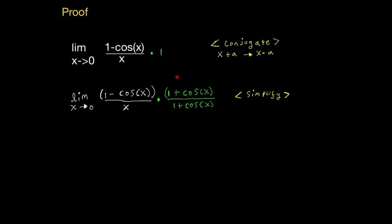Now we can simplify the numerators here by combining these two binomials, and we can distribute. So 1 times 1 is going to give us 1. 1 times positive cosine x is going to give us positive cosine x.